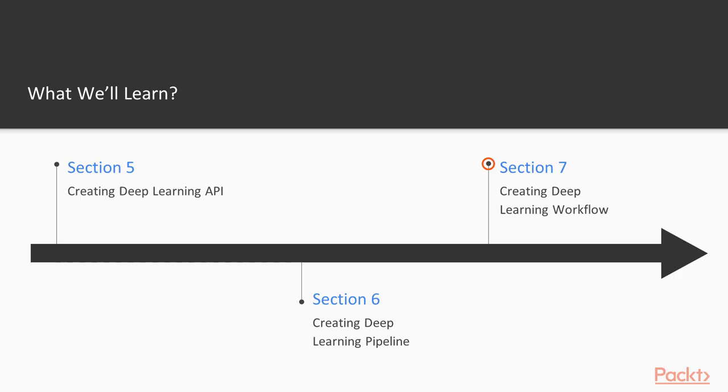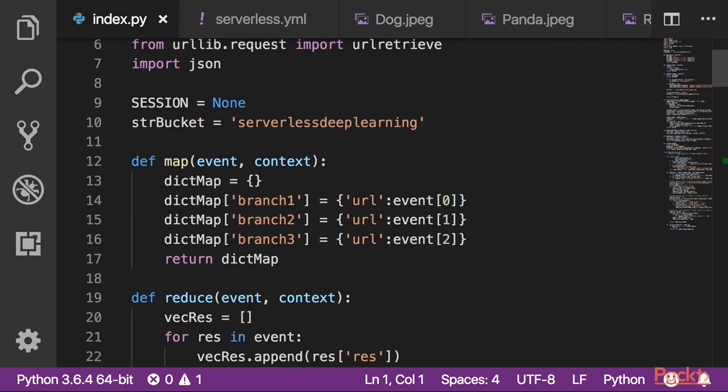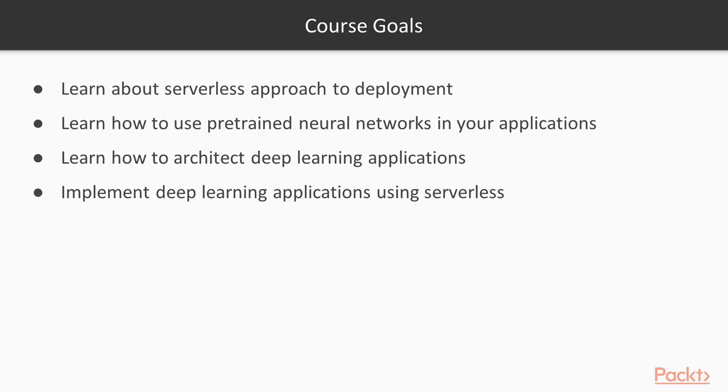In section 7, we will make a deep learning workflow. We will cover AWS Step Functions, look into how to use it with AWS Lambda, and show how to deploy the application with Step Functions.